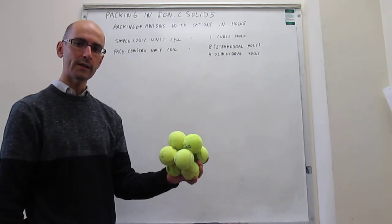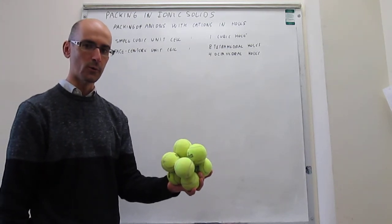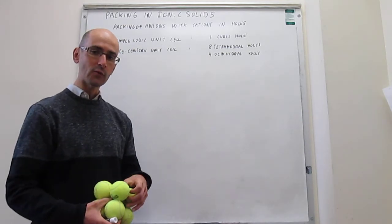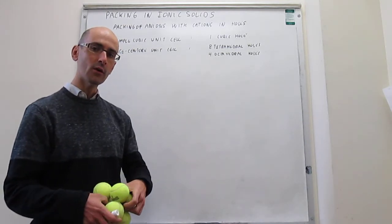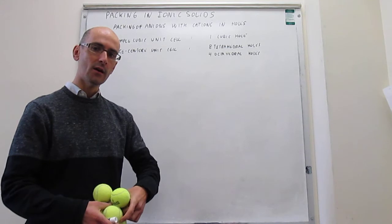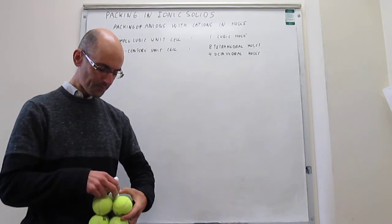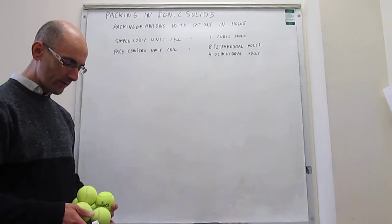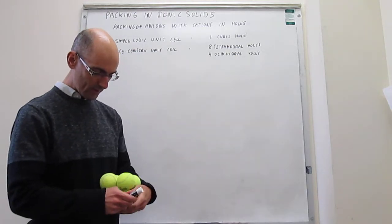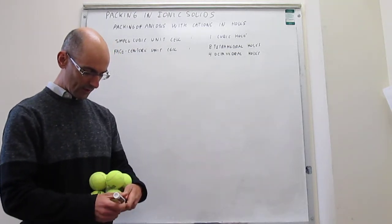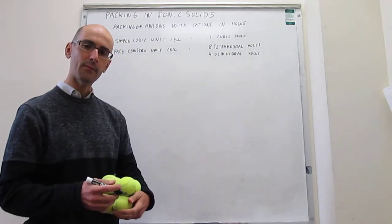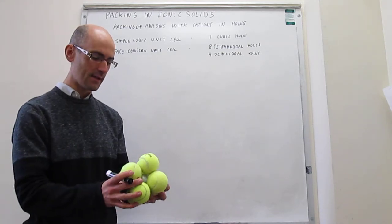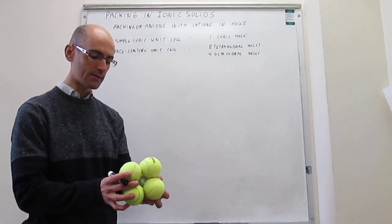The question is, what is the geometry of that cubic hole? We're going to try to relate that to the radii of the anions and the radius of the cation. Notice that what we're trying to calculate here is what is the closest fitting radius of that cation in the unit cell.